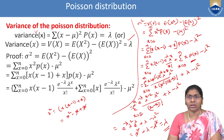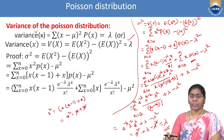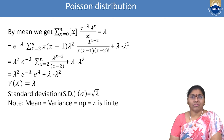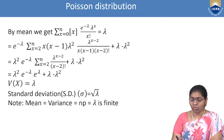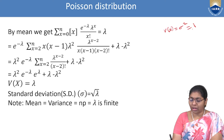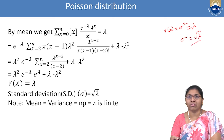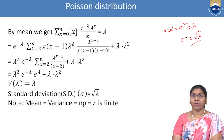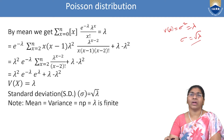Standard deviation: σ = √λ, since V(X) = σ² = λ, so σ = √λ. To summarize: mean = variance = np = λ, and it is a finite series.